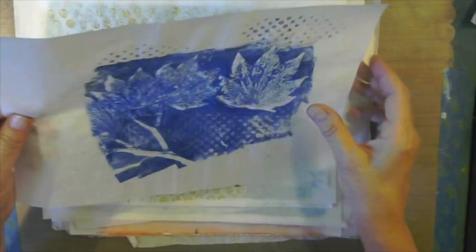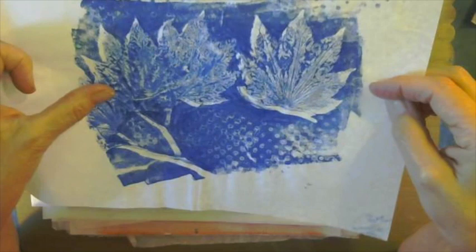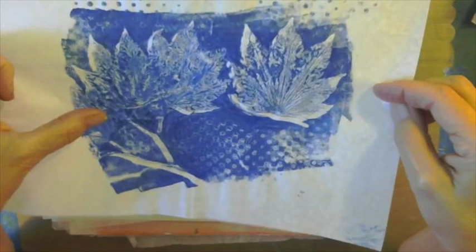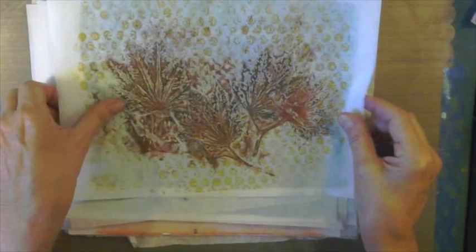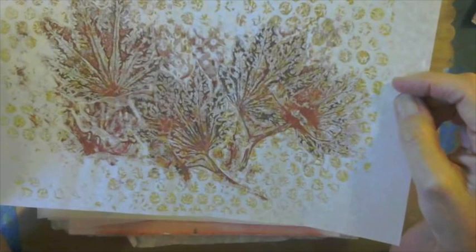This is where you take the silhouette of it and then you come back with a lot of paint on the leaves and you stamp into the silhouette part. I really love the way those come out.